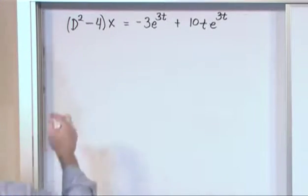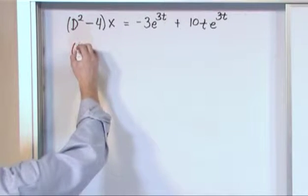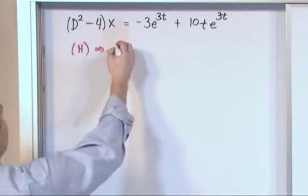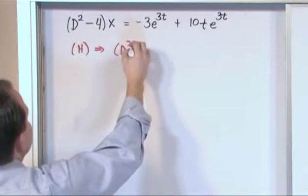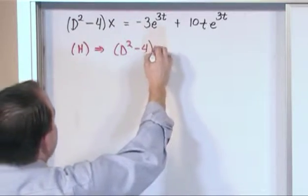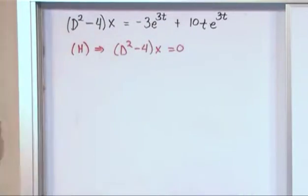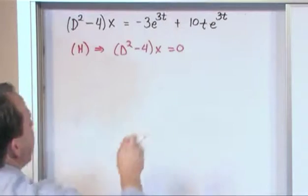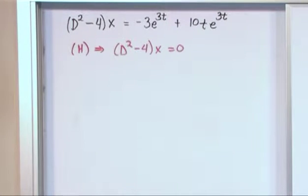The first thing we want to do is define this homogeneous version of this differential equation, which is just simply, very simple actually, d squared minus 4, operating on x is equal to 0. That's the first step. We just take away the right-hand side, throw it away, and set it equal to 0. Let's solve this version.